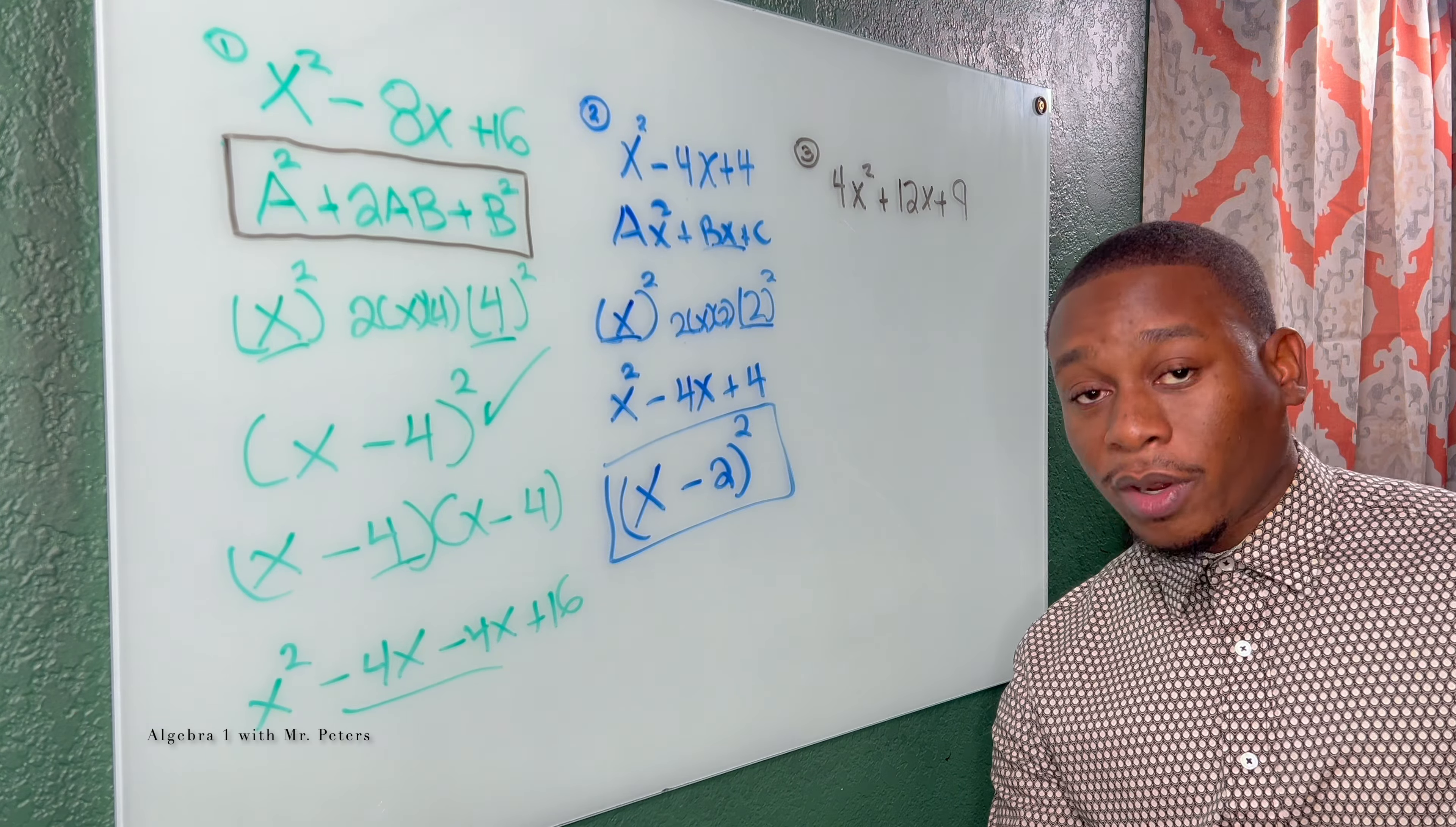So now they're asking us to basically create or fill in the c term to make this a perfect square trinomial, and there's two things we need to remember. B divided by 2 is one of them, and the second one is b divided by 2 squared. Why are these important? One, to find c we're going to use this, and then after we do that to find the binomial that we would square to get the trinomial, we'll do this.